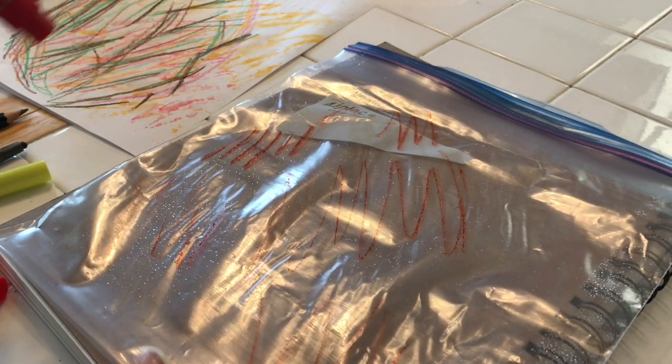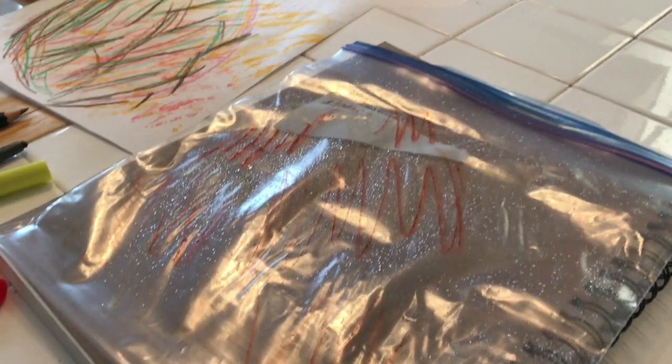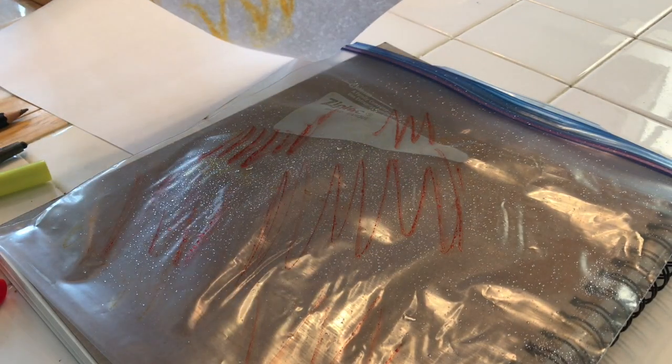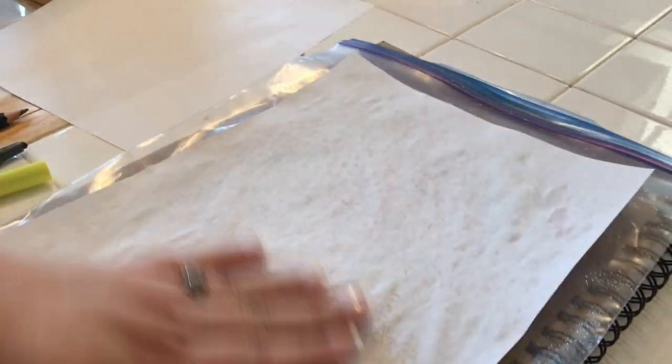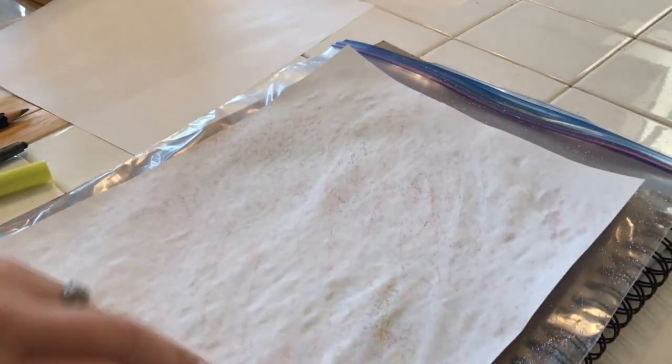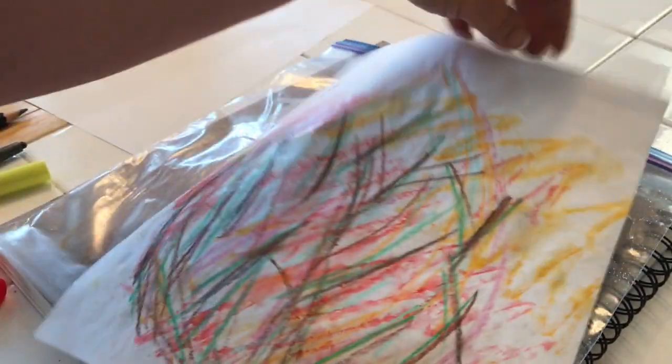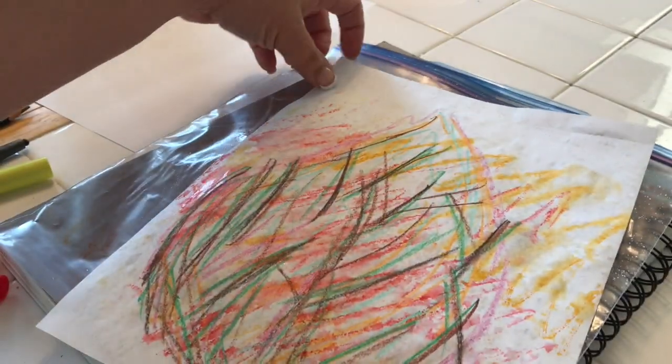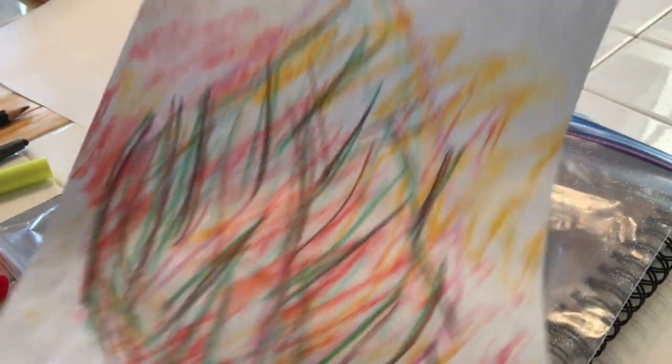All right. Spray that a little more. I'm going to take it and flip it upside down with the art facing the bag still. Pat that down. Peel that back up. And look at that. We now have a water colored burning bush.